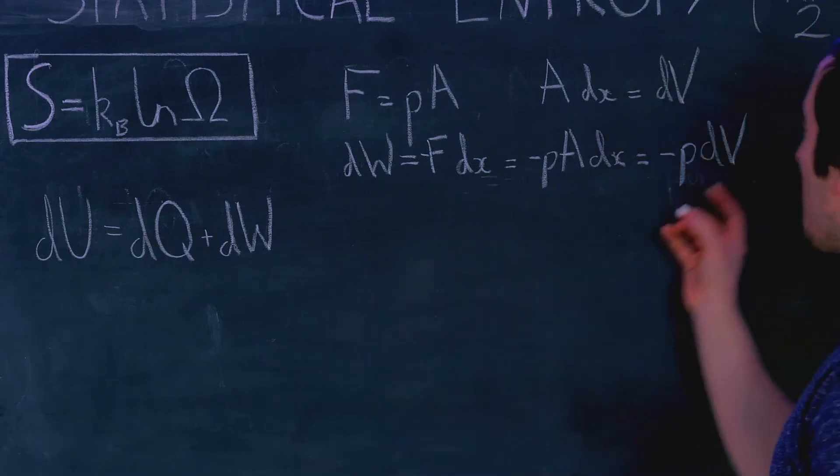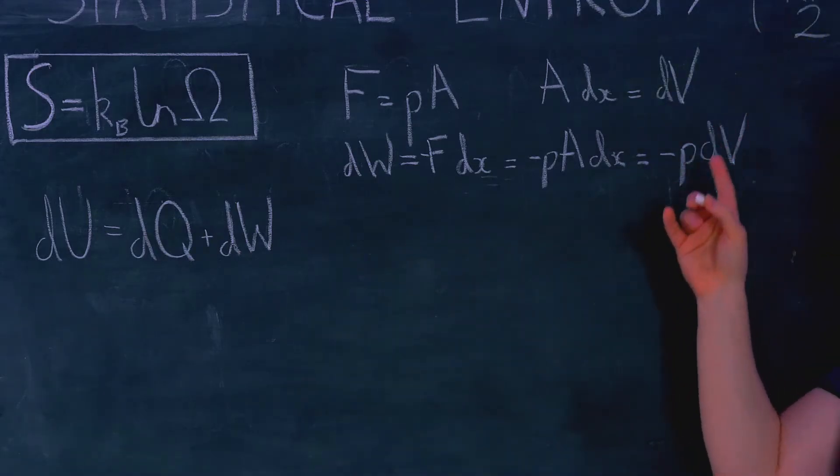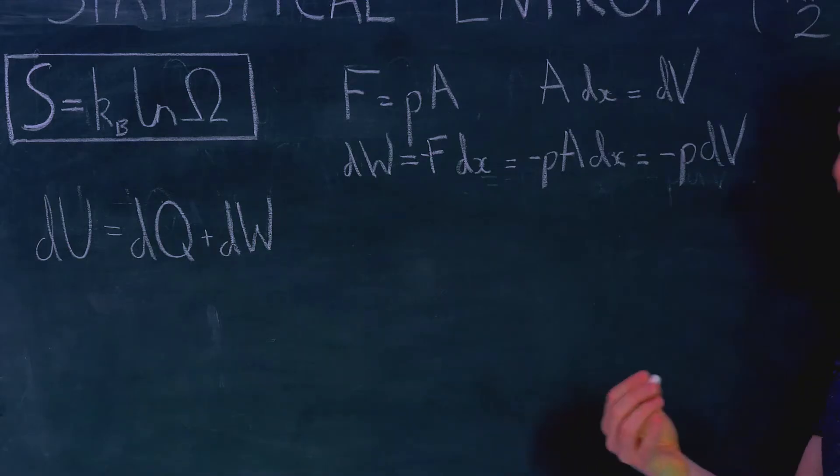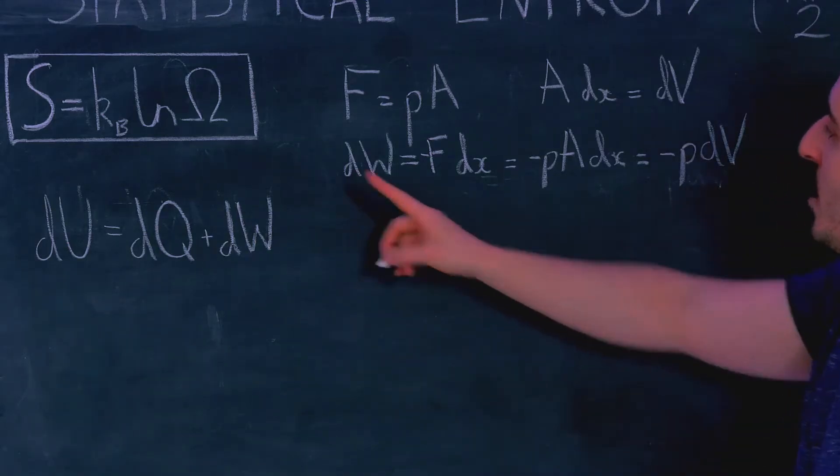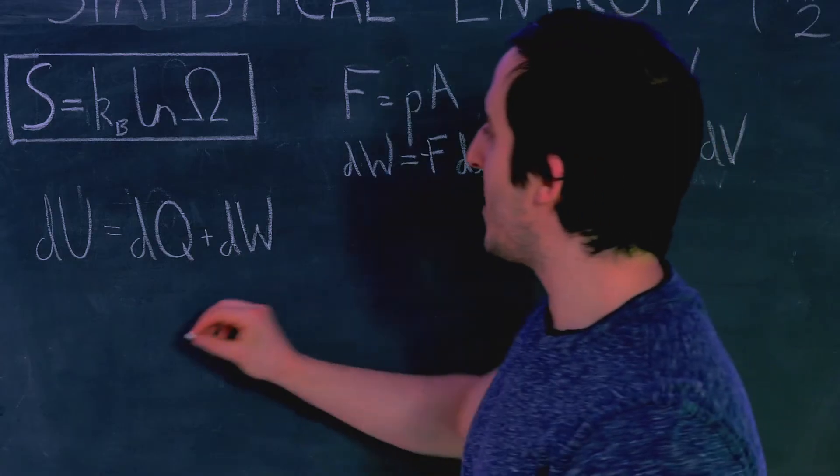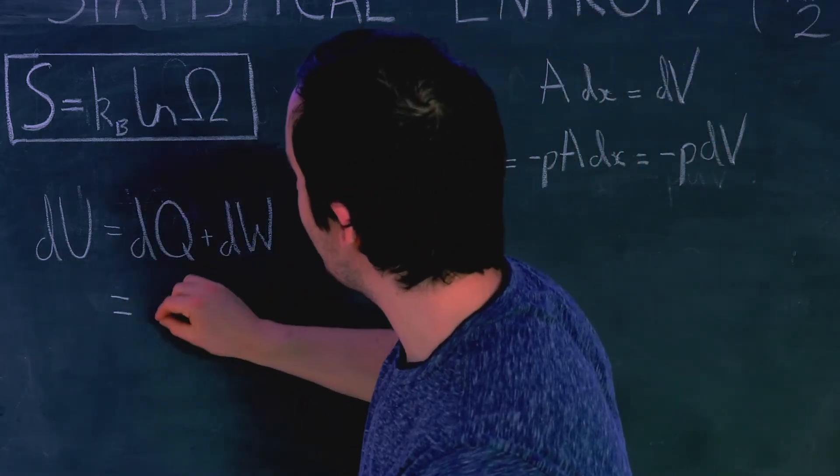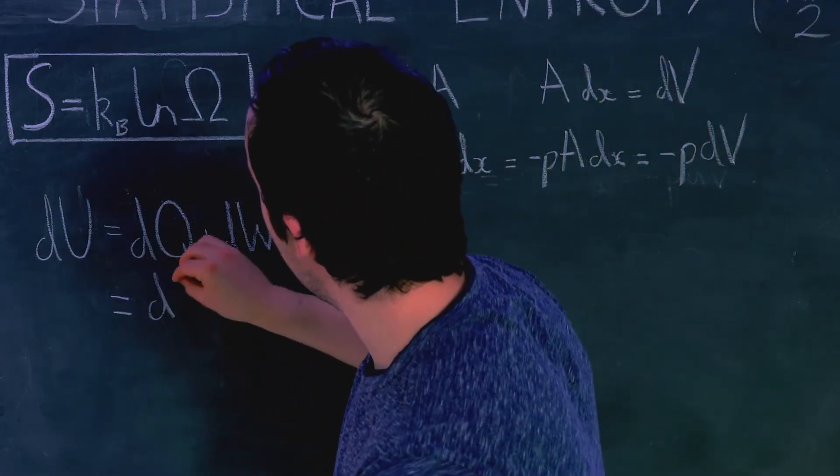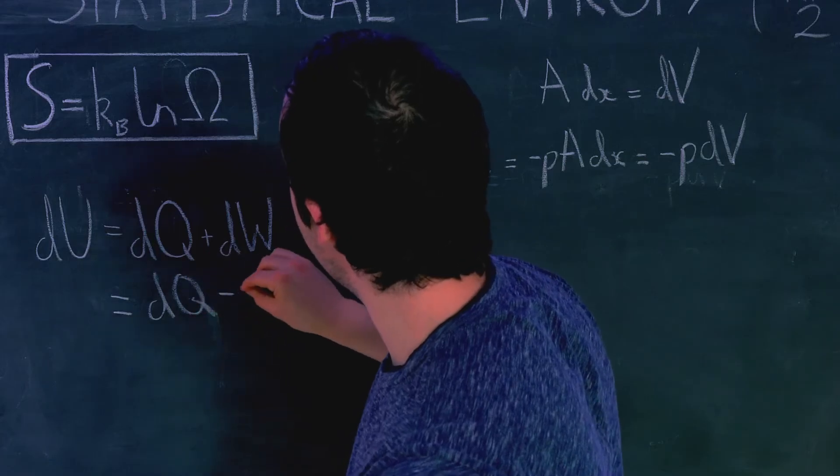So we have dW is equal to minus P dV so that's our first step so now we have dU is equal to dQ minus P dV.